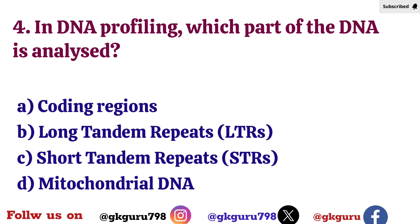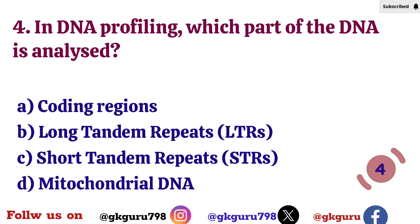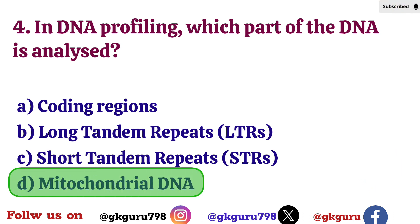Fourth question: In DNA profiling, which part of the DNA is analyzed? Option A: Coding regions. Option B: Long tandem repeats (LTRs). Option C: Short tandem repeats (STRs). Option D: Mitochondrial DNA. Correct answer: Option D — Mitochondrial DNA.